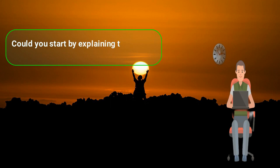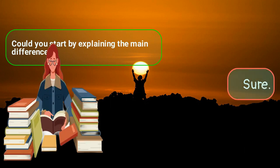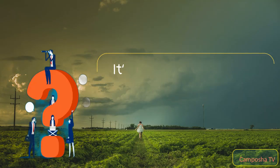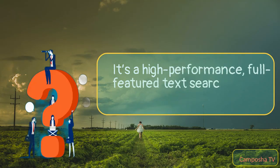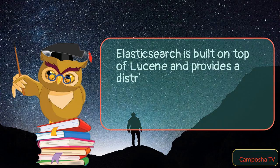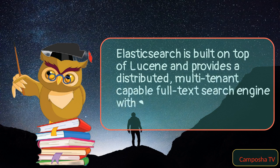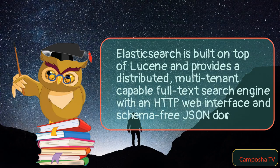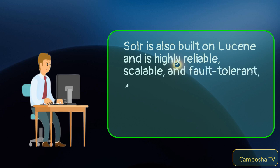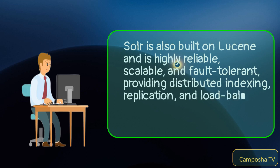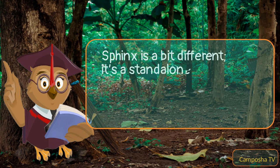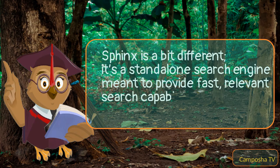Could you start by explaining the main differences? Sure. Apache Lucene is actually the foundation for both Elasticsearch and Solr. It's a high-performance, full-featured text search engine library written in Java. Elasticsearch is built on top of Lucene and provides a distributed, multi-tenant-capable full-text search engine with an HTTP web interface and schema-free JSON documents. Solr is also built on Lucene and is highly reliable, scalable, and fault-tolerant, providing distributed indexing, replication, and load-balanced querying with a centralized configuration. Sphinx is a bit different — it's a standalone search engine meant to provide fast, relevant search capabilities with SQL querying.